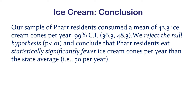'Statistically significant' means we did a hypothesis test and rejected the null hypothesis. So we conclude that far residents eat statistically significantly fewer ice cream cones per year than the state average of 50 per year.